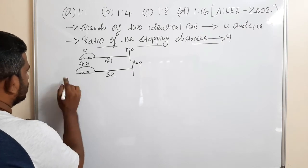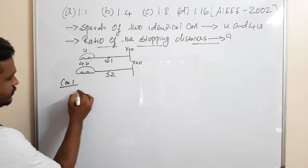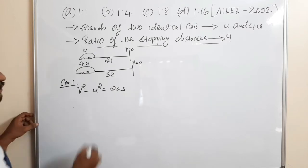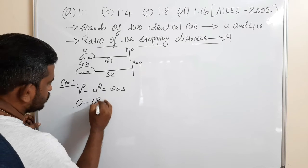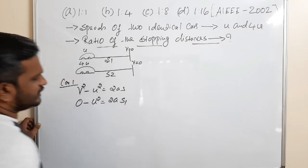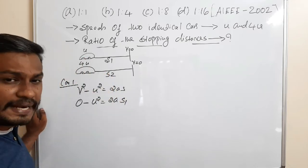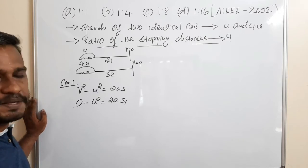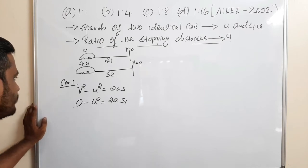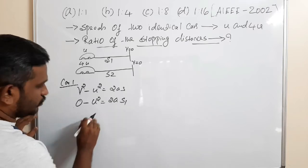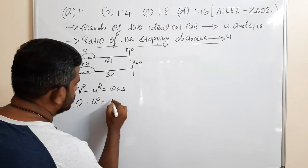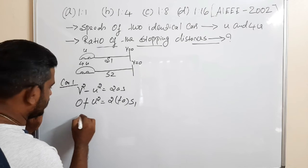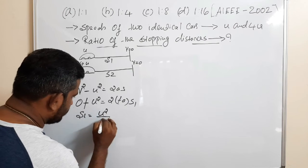For car 1, I am using the equation v² minus u² equals 2As. The final velocity is 0, and the initial velocity is u, so: 0 minus u² equals 2 into minus A into S1. Since it is decelerating, we use minus A. The two negatives cancel out.